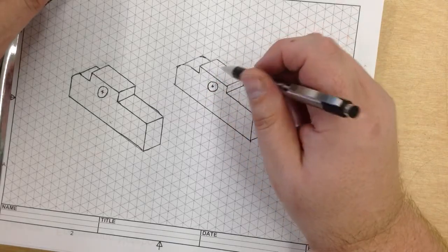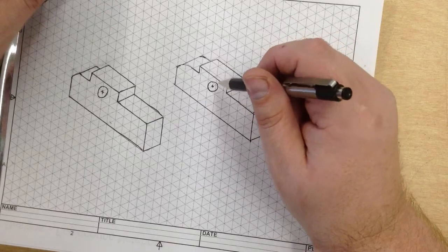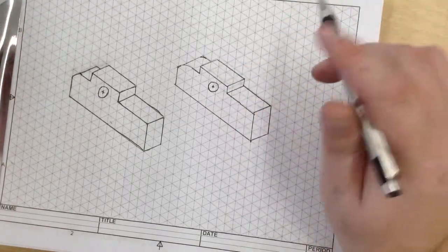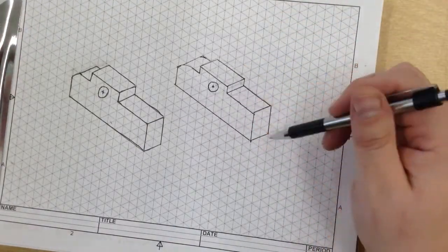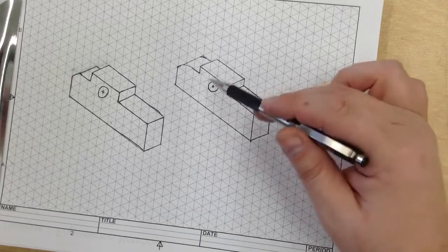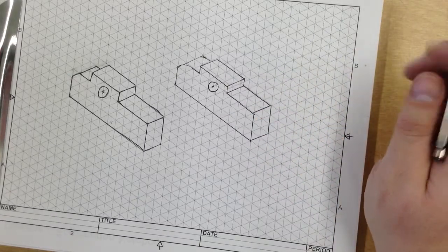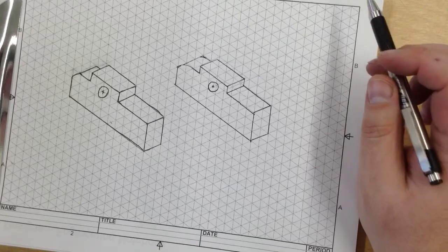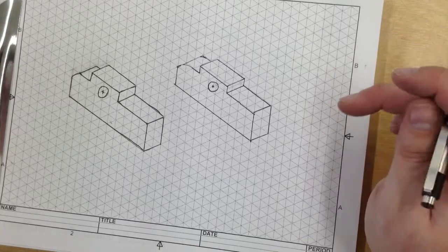We need to make sure that this is dimensioned properly. So, go through with your ruler and double check everything to make sure the width, depth, height, and diameters are as close as you can make them. If you have any questions, stop this video. Rewind and replay as many times as you need to get the concept. Thank you.